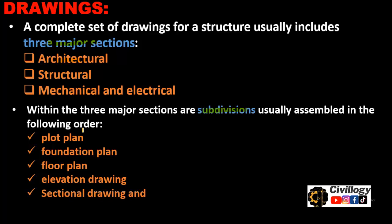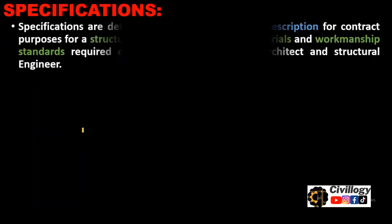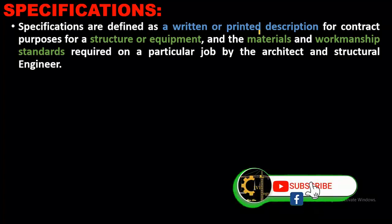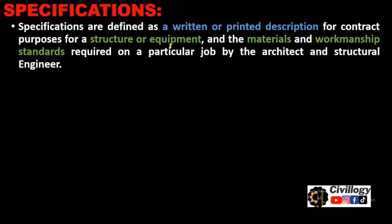Now coming towards specifications. Specifications are defined as a written or printed description for contract purposes for a structure or equipment. Specifications could be for both structure or equipment. They describe the materials and workmanship standards required on a particular job. Note that there is a specific method and material for the product required by the architect.